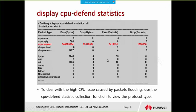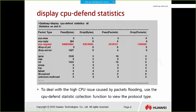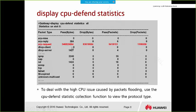To deal with high CPU issues caused by packet flooding, we can use the statistics collection function to view the protocol types. In this case, we can see ARP requests — there are too many, and the pass and dropped packet counts are very high. This means a large number of ARP requests are being sent to the CPU, causing the CPU usage to spike.